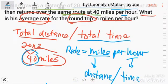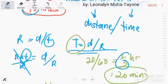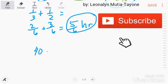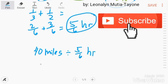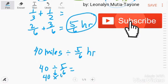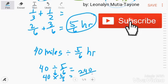Ang total distance natin, 40. So, this is 40 over total time natin ay 5 over 6 hour. Para klaro, lagay natin dito sa baba. Total time. By total distance, we have 40 miles. 40 miles divided by 5 over 6 hour. So, we have 40 divided by 5 over 6. Ito magiging multiplication. So, reciprocal ng 5 over 6 is 6 over 5. 40 times 6 is 240 over 5. 240 divided by 5, that is 48.